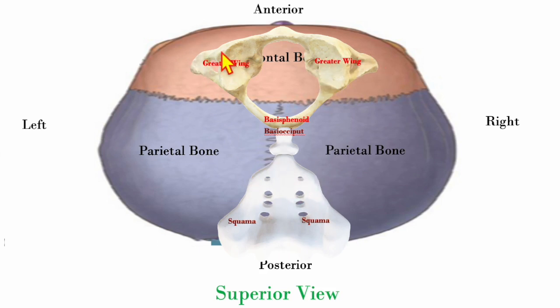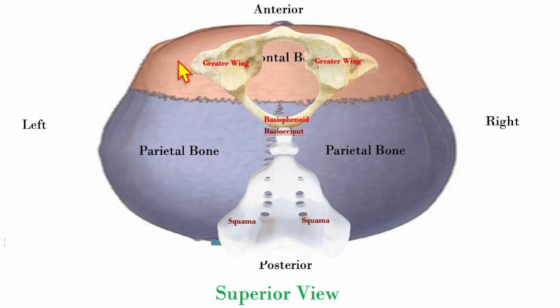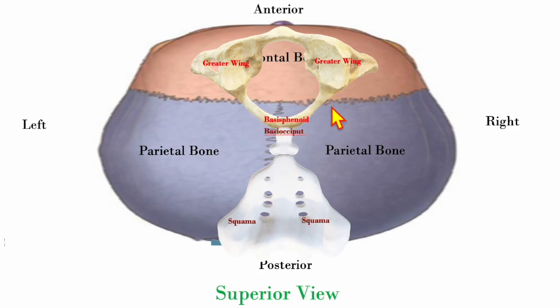There's the greater wings of the sphenoid, the basi-sphenoid, the basi-occiput, and the squamous. Remember: your second digit or index finger is going to be on the greater wings, and your fifth digit or pinky finger is going to follow the occipital squamous. Wherever the basi-sphenoid goes, that's the direction the sphenoid is moving.